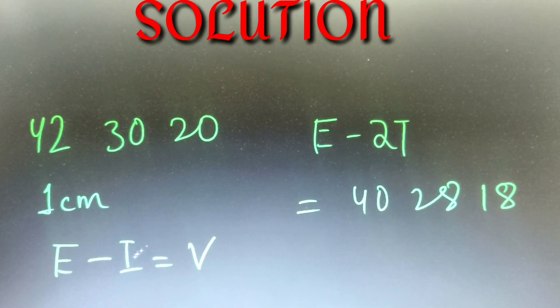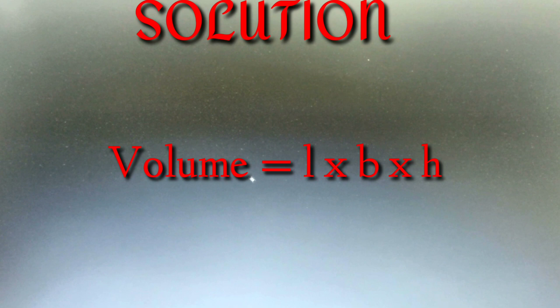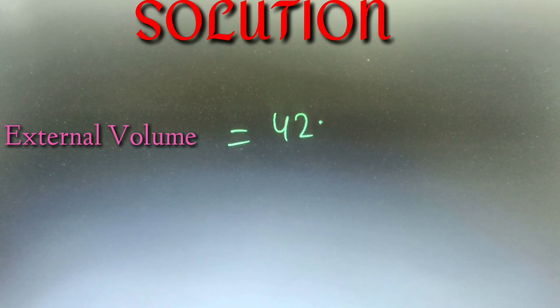We have to calculate the external volume and then subtract it with the internal volume to get the volume of the wood used. We know that the volume of a cuboid equals length times breadth times height. So the external volume is 42 times 30 times 20, which equals 25,200.